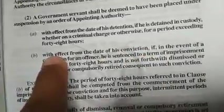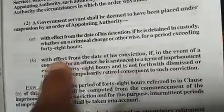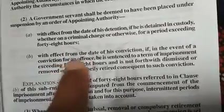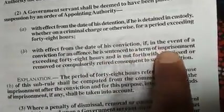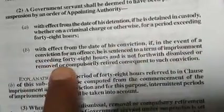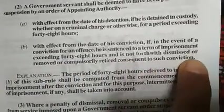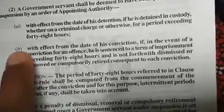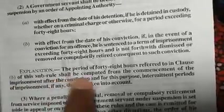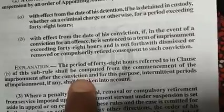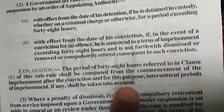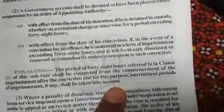The second reason under sub-clause (b) is with effect from the date of his conviction, if in the event of a conviction for an offence he is sentenced to a term of imprisonment exceeding 48 hours and is not forthwith dismissed, removed, or compulsorily retired consequent to such conviction. The period of 48 hours shall be computed from the commencement of the imprisonment after conviction, and intermittent periods of imprisonment shall be taken into account.